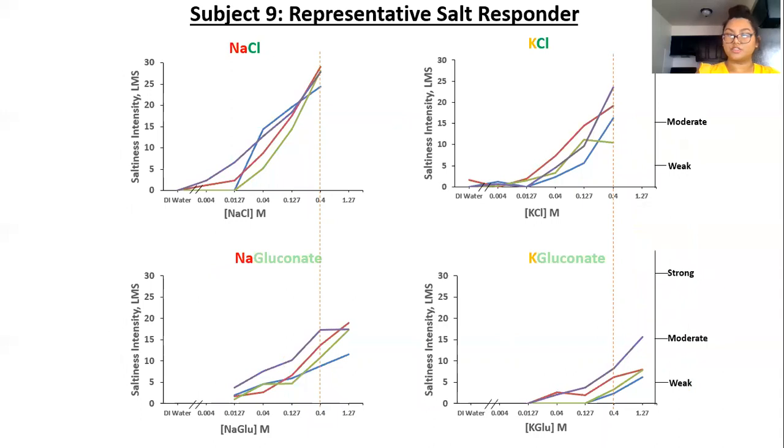Here is an individual representative of those subjects. We chose this person because their data closely resembles the group's data. We know that they're a reliable subject as they were tested four times shown by the lines here. And all of their tests are very similar to each other.